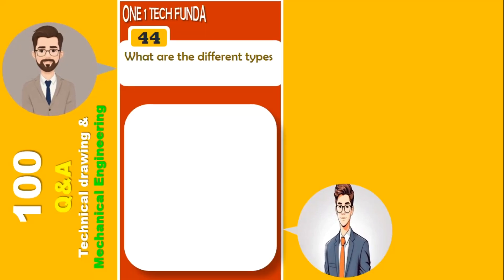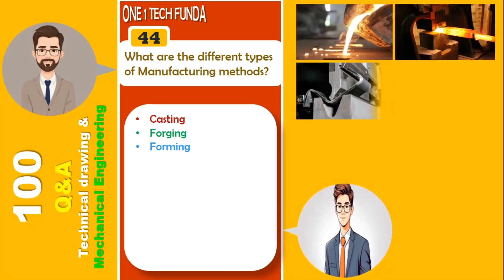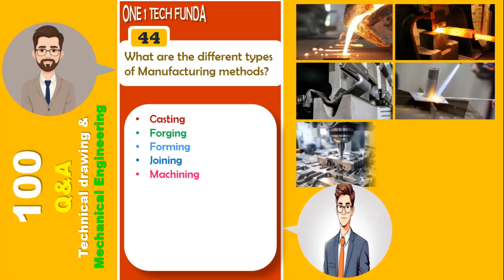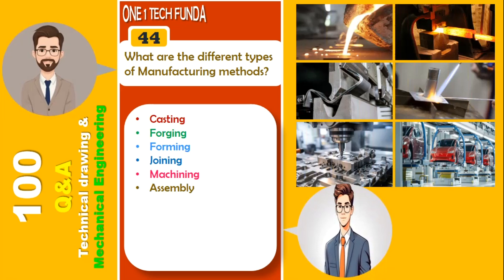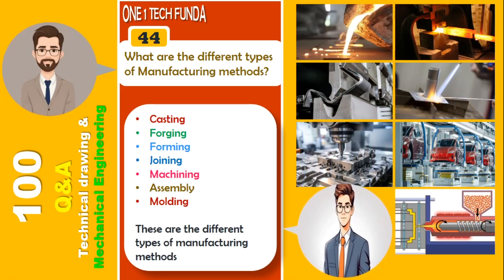What is manufacturing? Manufacturing is the process of transforming raw materials into finished goods through various methods and techniques. The different types of manufacturing methods include casting, forging, forming, joining, machining, assembly, and molding.